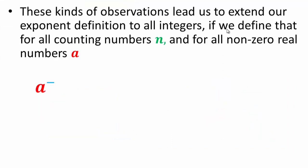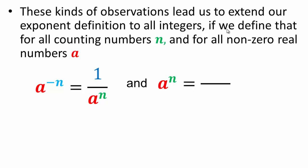These observations let us extend our exponent definition to all integers. If n is a counting number, a to the power negative n is the same as 1 over a to the n. And a to the positive power n is the same as 1 over a to the negative n. This is very important — see if you can make sense of this.